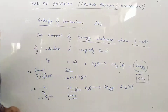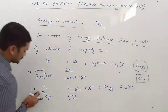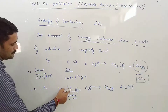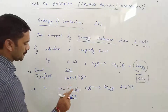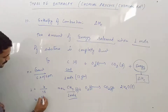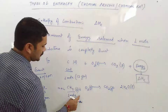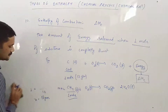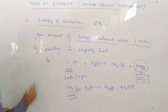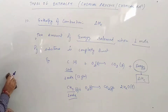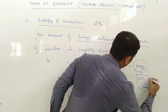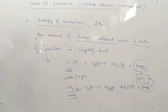Ek aur example lete hain — CH₄ methane, jisko hum gadiyon mein CNG ki tarah bhi use karte hain. CNG ka ek mole humein jalana hai. Methane ka molecular mass nikalo: 12 + (4×1) = 16. To ek mole methane = 16 gram. 16 gram methane jab jalao ge tab jo heat produced hogi, that is called enthalpy of combustion. Amount of energy released when one mole of substance is completely burnt — this is called enthalpy of combustion, represented by delta H_C.